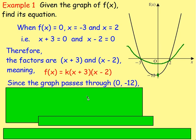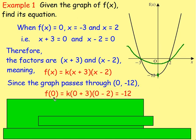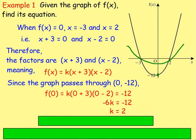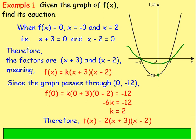When x is 0, y is negative 12. So we substitute into the equation: f of 0 equals k times 0 plus 3, times 0 minus 2, and we know that equals negative 12. That gives us negative 6 times k, because 0 plus 3 is 3, 0 minus 2 is negative 2, and 3 times negative 2 is negative 6. So negative 6k equals negative 12. Divide by negative 6, and k equals 2. Therefore, the equation is f of x equals 2 times x plus 3, times x minus 2.